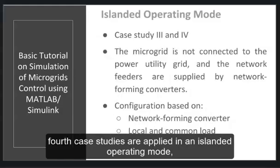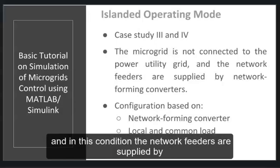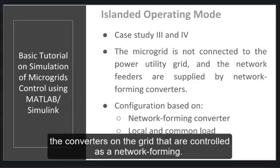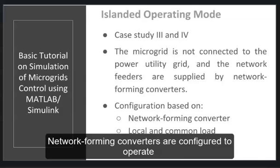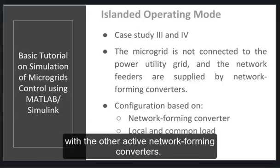The third and fourth case studies are applied in an islanded operating mode in which the microgrid is not connected to the power utility grid. In this condition, the network feeders are supplied by the converters on the grid that are controlled as network forming. Network forming converters are configured to operate equivalently as a voltage source and they are synchronized with the other active network forming converters.